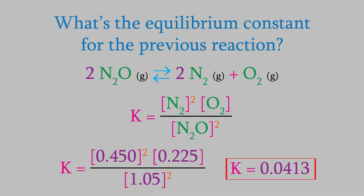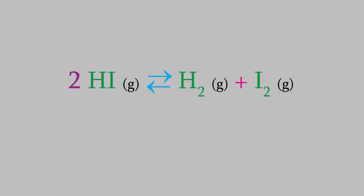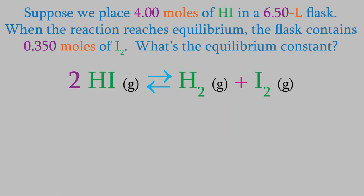Let's do another example. Suppose we study this reaction by placing 4.00 moles of HI into a 6.50 liter flask. When it reaches equilibrium, there are 0.350 moles of I2. What's the equilibrium constant of the reaction?